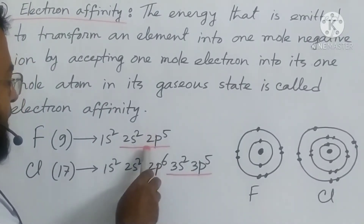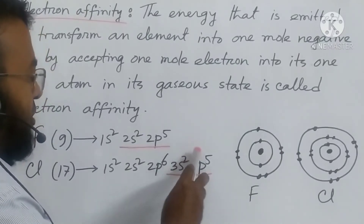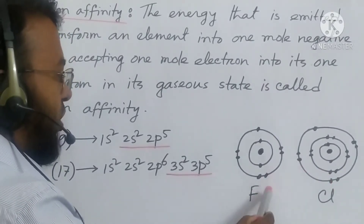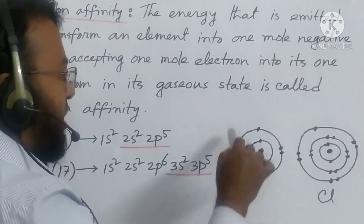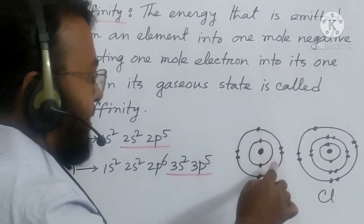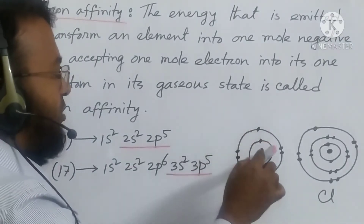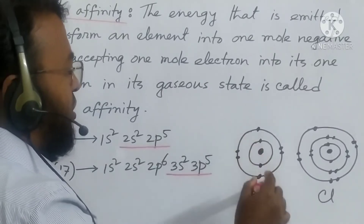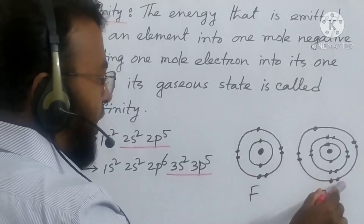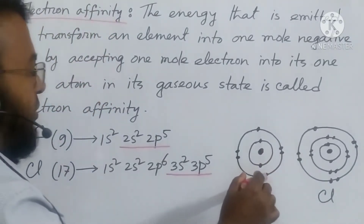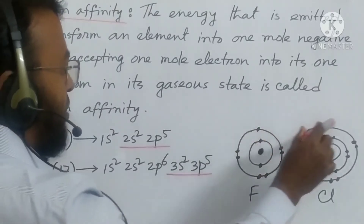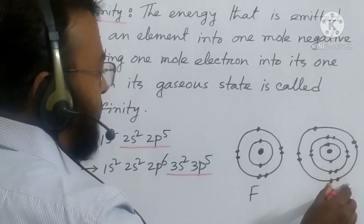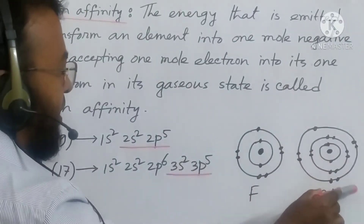Among fluorine and chlorine, fluorine is smaller in size than chlorine. So in fluorine, the density of electrons in the outermost energy level is high. If any electron wants to be accepted, there is greater repulsion. So the electron affinity of chlorine is more than fluorine because of atomic size and the higher electron density in fluorine's outermost energy level. For this reason, the electron affinity of chlorine is higher than fluorine.